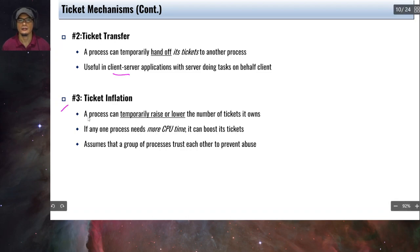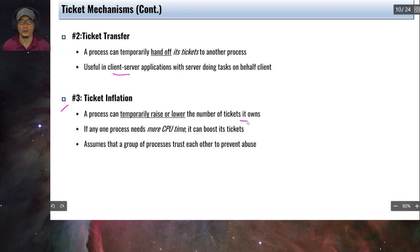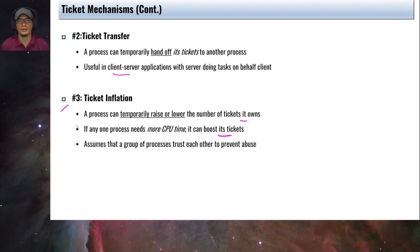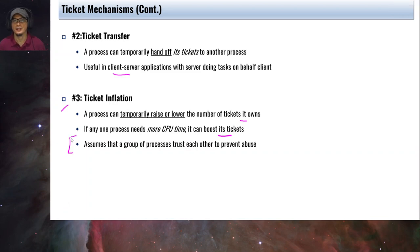The third ticket mechanism is called ticket inflation. A process can temporarily raise or lower the number of tickets it owns. If a process needs more CPU time, it can boost its tickets. However, if this is allowed, it can be abused by malicious processes. The assumption for ticket inflation is therefore that the group of processes trust each other.